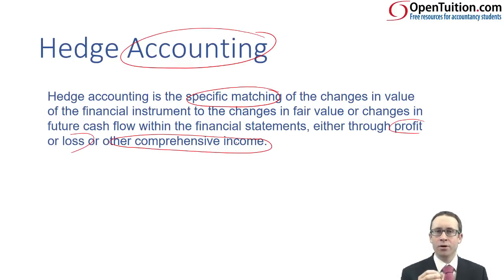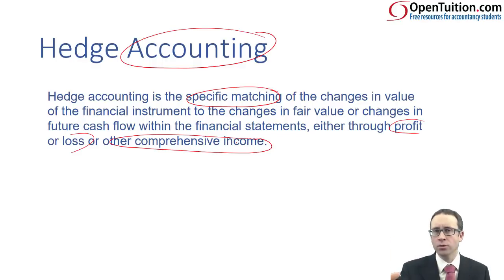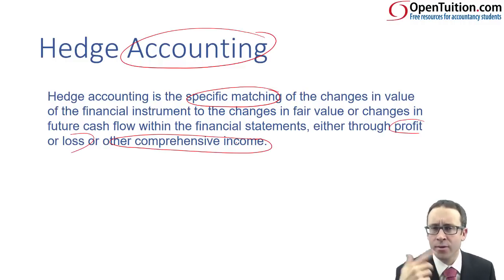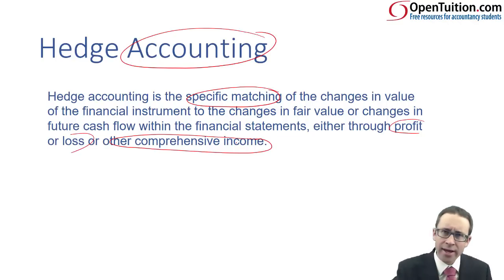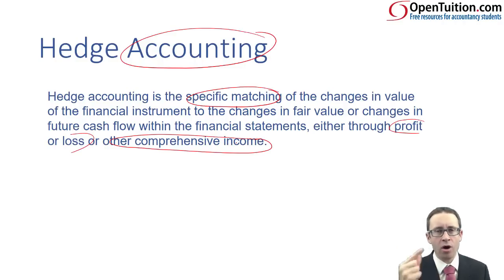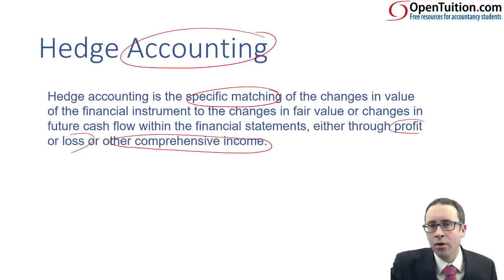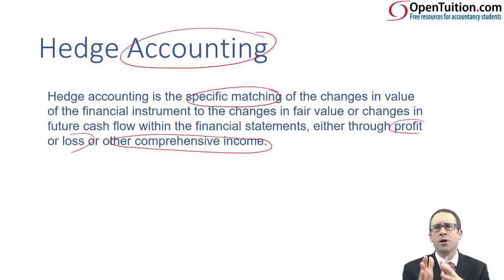It's a specific matching process. What you need to understand is that hedging has its own specific rules — it goes against any other rules we have with regards to other accounting standards. Quick test: inventory — how do we value inventory? The lower of cost and NRV. So if there was no hedging, that's how you'd value inventory. However, if you try to protect the value of your inventory in a specific hedge accounting transaction, forget IAS 2. It no longer exists. There will be separate rules within hedge accounting. That's why it's difficult.